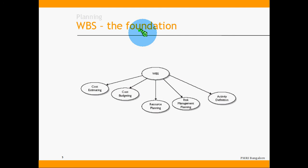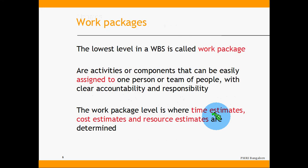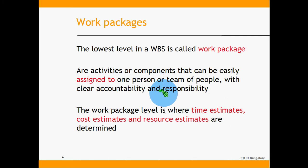Once the WBS is done, it becomes the foundation for all remaining work. Based on the WBS, you produce cost estimates, cost budgets, resource planning, risk management planning, and activity definition. The lowest level in a WBS is called a work package — activities or components that can be easily assigned to one person or a team with clear accountability and responsibility. The work package level is where time, cost, and resource estimates are determined. As a project manager, you exercise control at the work package level, not the activity level.